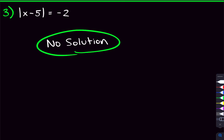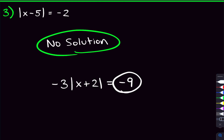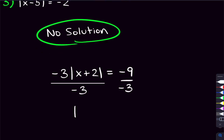For example, if you had negative 3 times the absolute value of x plus 2 equals negative 9, and you saw the negative and called no solution right away, you'd be wrong. You have to isolate the absolute value first. Dividing both sides by negative 3 gives the absolute value of x plus 2 equals positive 3 — negative 9 divided by negative 3. Now the right-hand side is positive, so this equation does have solutions. Only after isolating the absolute value, if the right-hand side is still negative, then there's no solution.